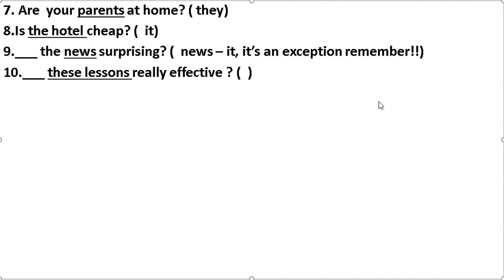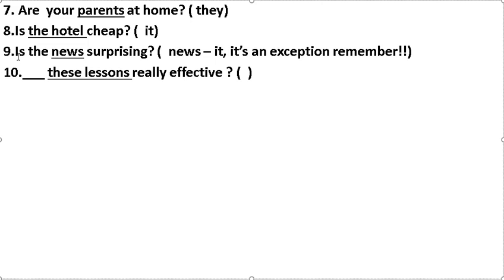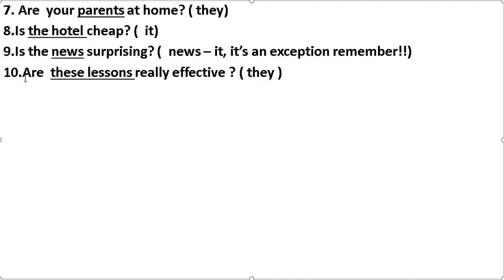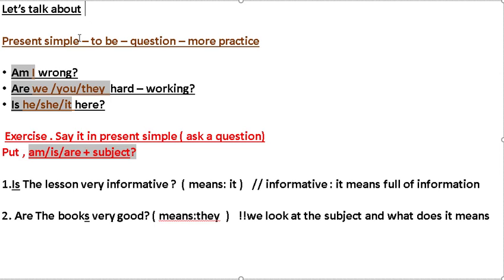Exception: remember 'the newest' — it's an exception. 'Is the newest surprising?' And: 'This list is really effective.' We have more than one list, so we use 'are': Are these lists really effective? Present simple 'to be' question — more practice.